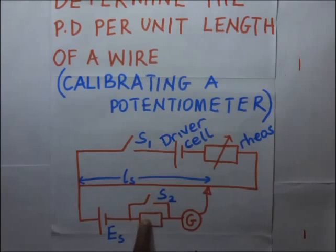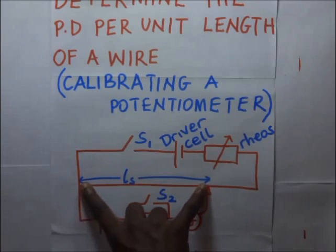Closing our switch s2 means that we have removed this resistor out of the circuit. It means current coming in will bypass this resistor and the exact balance point is now obtained. When we get the balance point after closing switch s2, then we label that balance point ls. We measure it and record it.